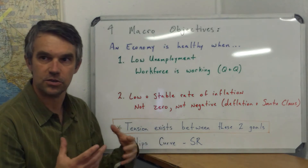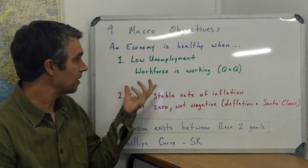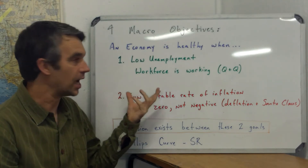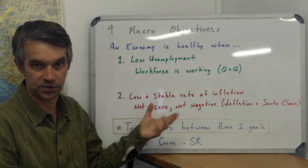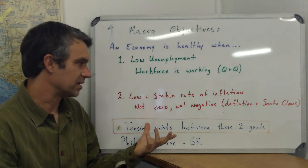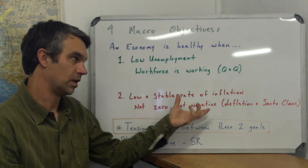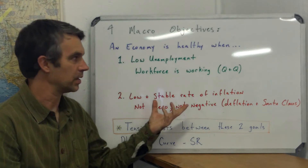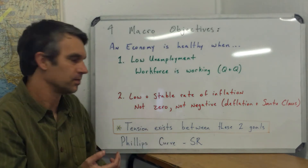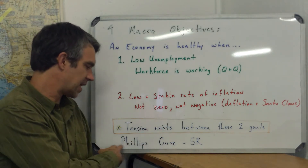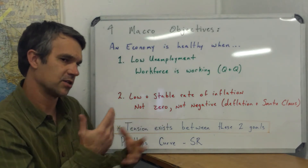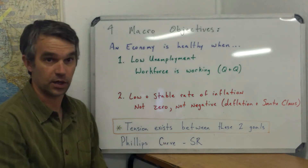These two objectives in particular tend to fight against each other. If you have low unemployment, most people are going to be employed, which means price levels are likely to be driven up because there will be increased levels of aggregate demand in the country. And vice versa — if there's no inflation and price levels aren't going up, it's unlikely that unemployment will be very low, because you're probably in a recession. That's what we see in the short-run Phillips Curve, which we've discussed before and there's also a video you can look at.